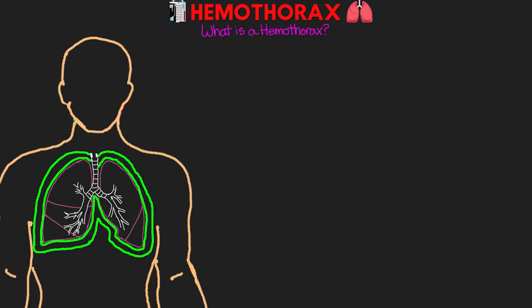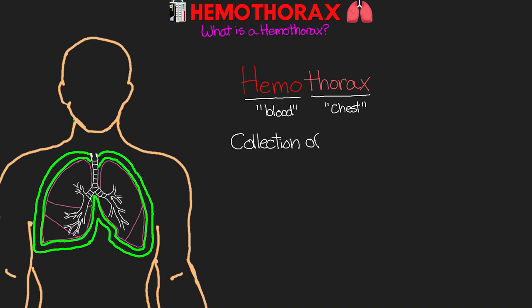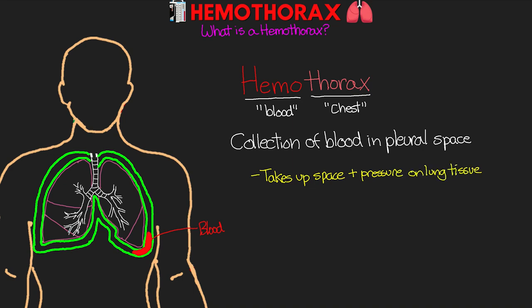Let's start off talking about what is a hemothorax. If we break the word down, we have hemo meaning blood and thorax meaning chest. So essentially this is going to be a collection of blood in the chest, or more specifically the pleural space. Having blood in this pleural space does a couple of different things — it takes up space and puts pressure on the lung tissue, keeping them from fully expanding. This is going to cause alveolar hypoventilation, lead to a VQ mismatch, and essentially anatomical shunting where we're perfusing areas of the lung without any good gas exchange taking place.